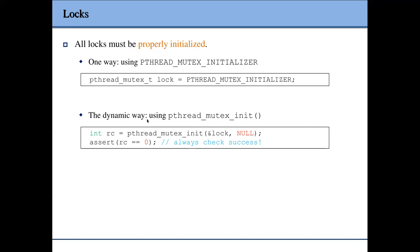If you are using the dynamic way, you should also check the return value. If the pthread library successfully initializes the mutex based on the attribute you provided, it returns zero indicating success. If the return value is non-zero, it represents an error, and you can perform error handling based on that return value.